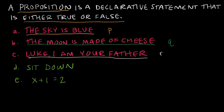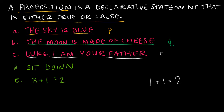A lot of people struggle with E because they say that could be true or false. While your thinking is correct, the way it is written is not a proposition. If I replaced X with some value — say where X equals 5 — now it's a proposition because 5 plus 1 equals 2 is false. Or where X equals 1, then 1 plus 1 equals 2 is true. But if I don't assign a value for X, this is not a proposition because it is not true or false.